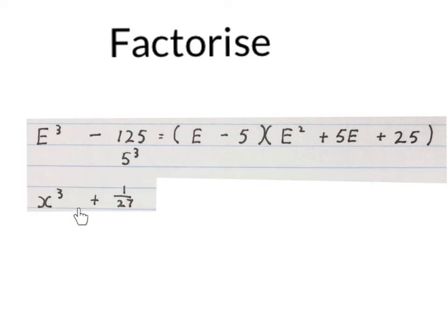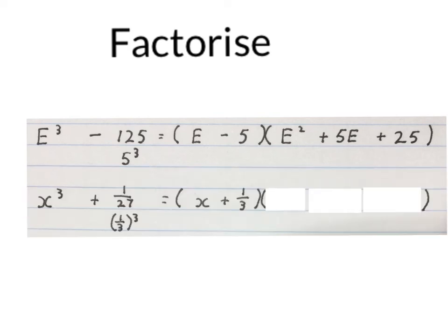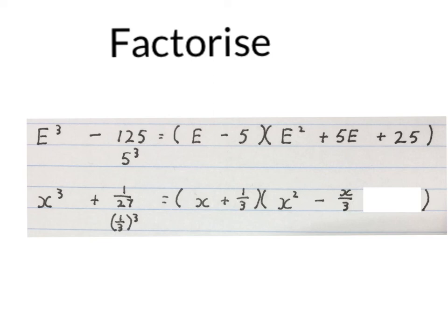Let's factorize X cubed plus 1 over 27. The cube root of X cubed is X. Put the plus down. The cube root of 1 over 27 is one third. X times X is X squared. X times one third — change the sign — is minus X over 3. And plus one third times plus one third is plus one ninth.